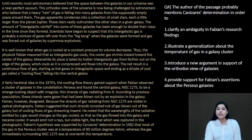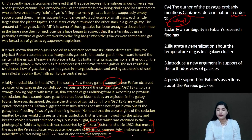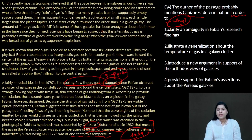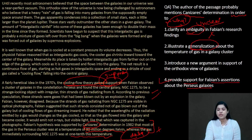Question number 4: the author probably mentions Canizares' determination in order to — why is that example given? It is because we said the cooling flow theory gained support. Canizares gave data in the last few lines — the central gas is 80 million Kelvin and surrounding gas is one-tenth of that temperature. That data is given to support Fabian's cooling flow theory. Option: provide support for Fabian's assertion about the Perseus galaxies — yes, Fabian's assertion is supported. That is the correct answer, option 3.